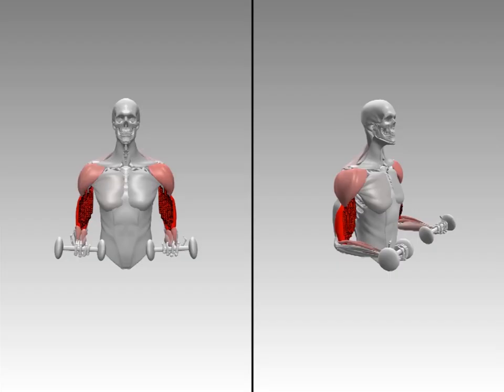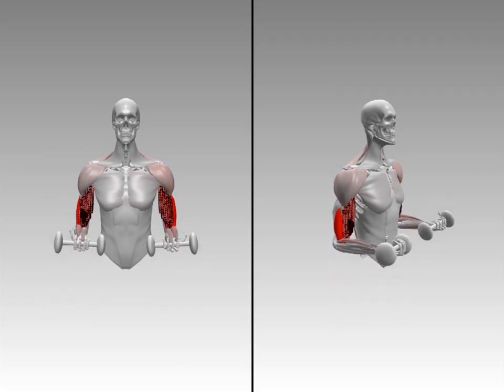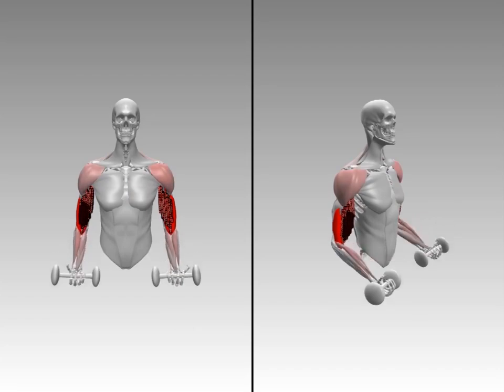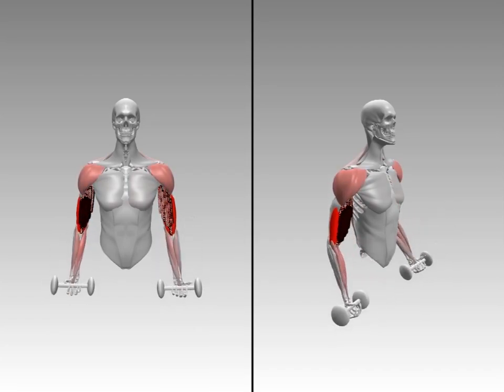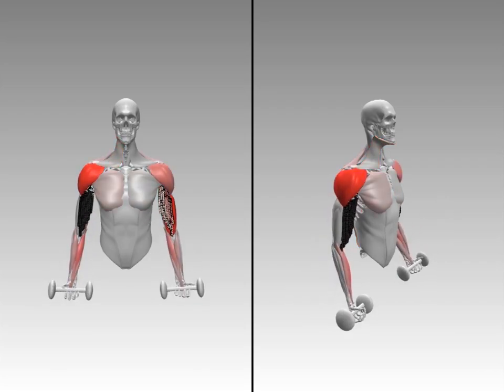Our volumetric model offers the flexibility to edit the material property of individual cells. This example demonstrates paralysis spreading progressively over the biceps and brachialis. Deactivated cells shown in black do not generate any contractile force.